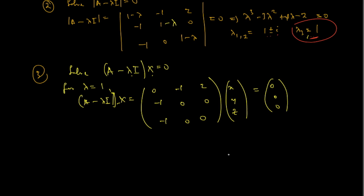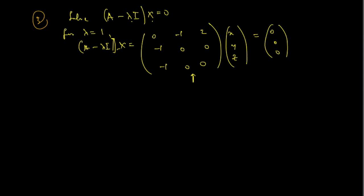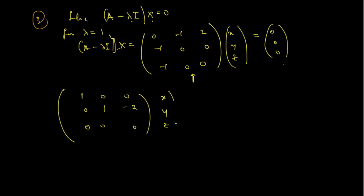This is what you obtain. To solve this linear system, the first thing you have to do is reduce the coefficient matrix to canonical form. On reducing that coefficient matrix, what you obtain is: 1, 1, 0 in the first row; 0, 1, negative 2 in the second row; and 0, 0, 0 in the third row. Then we have x, y, z equals 0, 0, 0.